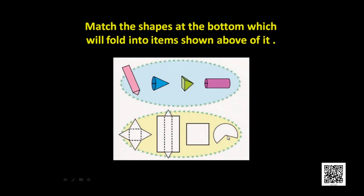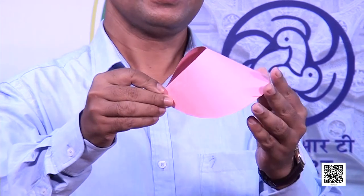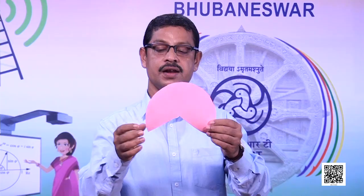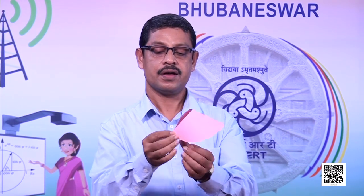Similarly, here you see this figure — if I fold it, what will I get? You see, I am getting a cone here. Again, I am doing it. You see, this is a circle — I have got some part of it. Then I am folding it and I am getting a cone. So when the last shape is folded, I am getting a cone.